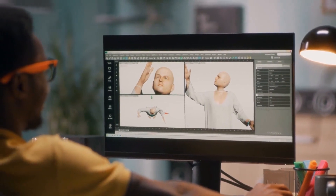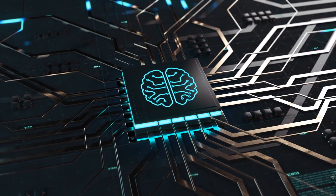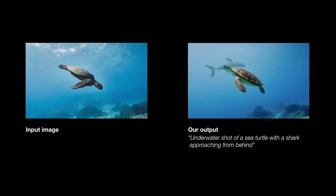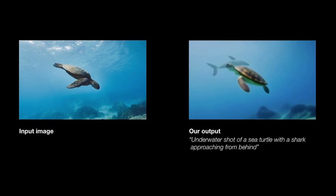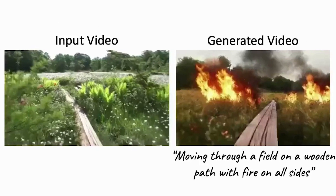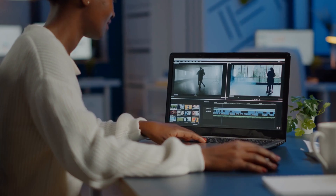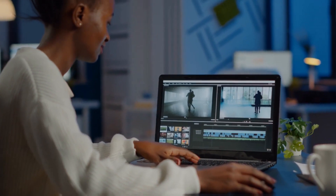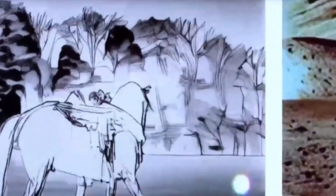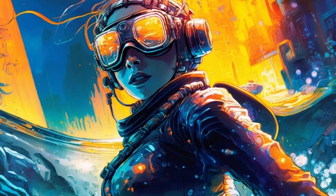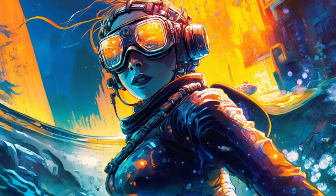Secondly, for a small collection of images with the same subject given as input, the model can generate new videos with the subject in motion. This feature provides significant creative possibilities for videographers and video editors, allowing them to animate images in a way that was previously impossible. Thirdly, with only an image and a text input, the model can create videos while preserving the visual fidelity to object location and background, providing a high degree of flexibility and creative possibilities.